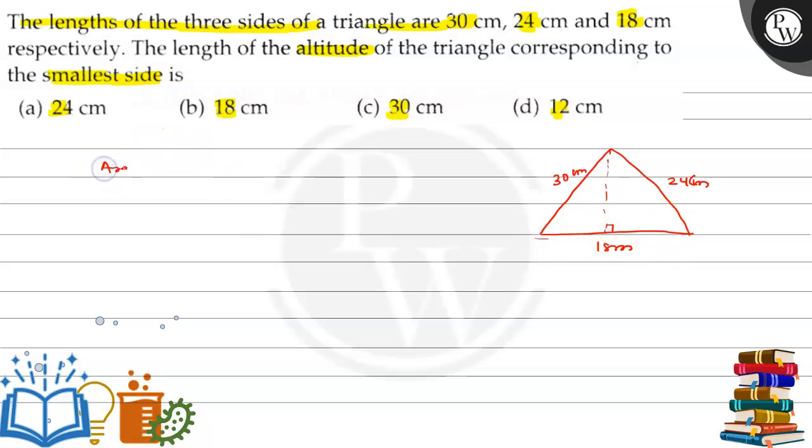As we know, the area of a triangle is equal to √(S(S-A)(S-B)(S-C)), where S is the semi-perimeter and A, B, C are the sides of the triangle.